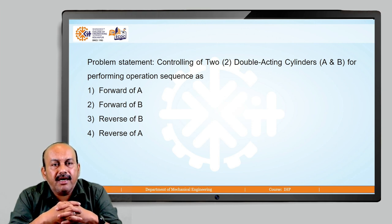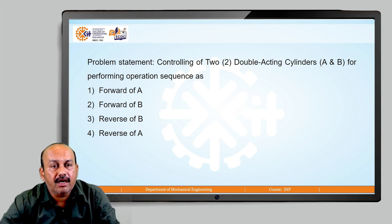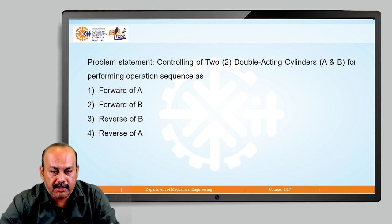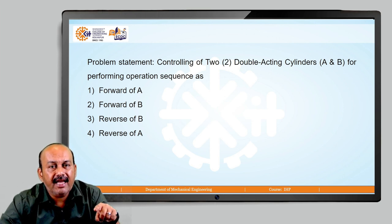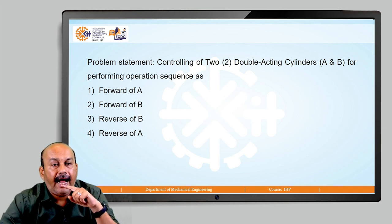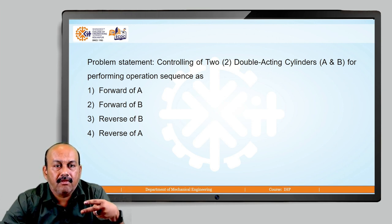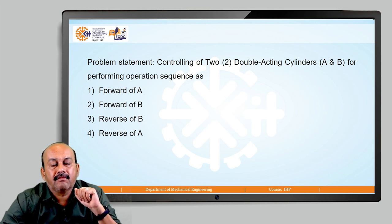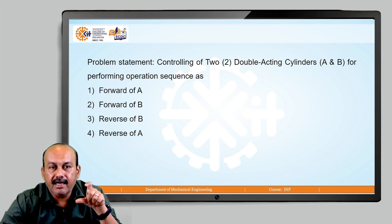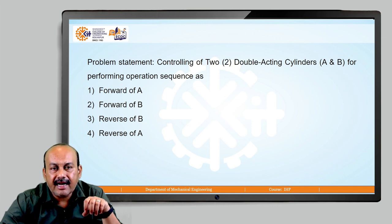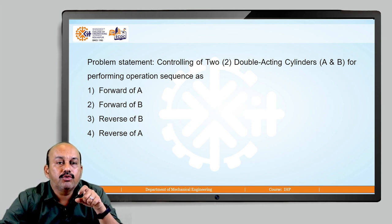Looking at all four stages, we observe they are not simply: forward of A, forward of B, reverse of A, reverse of B — it is not like that. We also have to note that when there are two cylinders, both double acting, we must take care of how these two cylinders are included in the hydraulic circuit so as to provide the required sequence of operation.